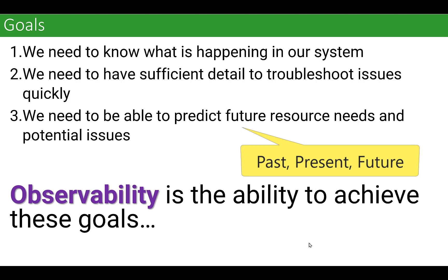If you go and read a lot of the literature, there'll be a lot more goals than that — very erudite, very nuanced — but really big picture, there's very little that doesn't fit into one of these goals. What's happening now, what happened in the past, and if it went wrong, what went wrong, and what is the future? The past, the present, the future gives you observability.